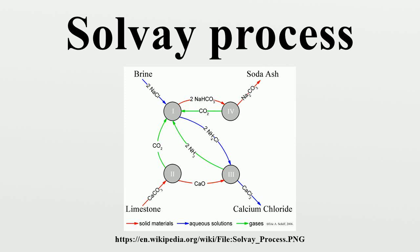The new process proved more economical and less polluting than the Leblanc method, and its use spread. In 1874, the Solvays expanded their facilities with a new, larger plant at Nancy, France. In the same year, Ludwig Mond visited Solvay in Belgium and acquired rights to use the new technology. He and John Brunner formed the firm of Brunner, Mond & Co., and built a Solvay plant at Winnington, near Northwich, Cheshire, England. The facility began operating in 1874. Mond was instrumental in making the Solvay process a commercial success, making several refinements between 1873 and 1880 that removed by-products that could slow or halt the process.